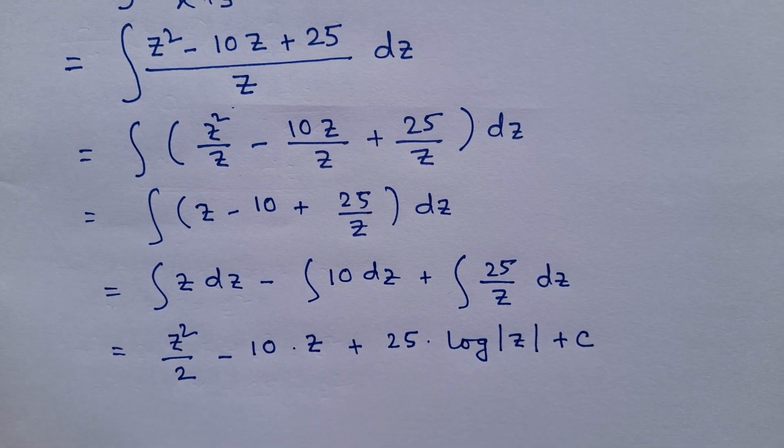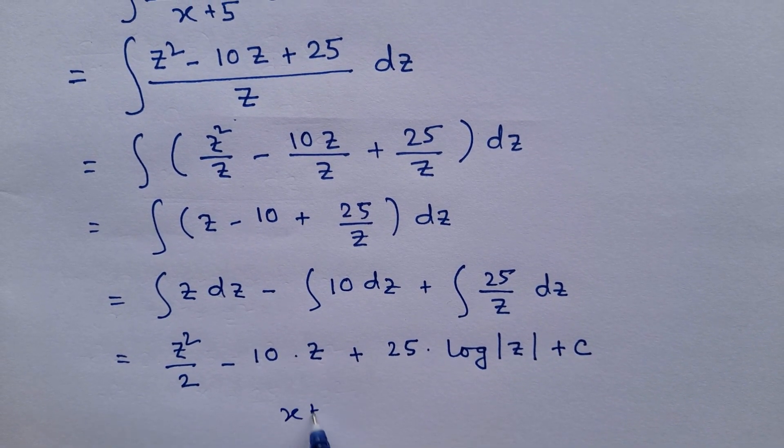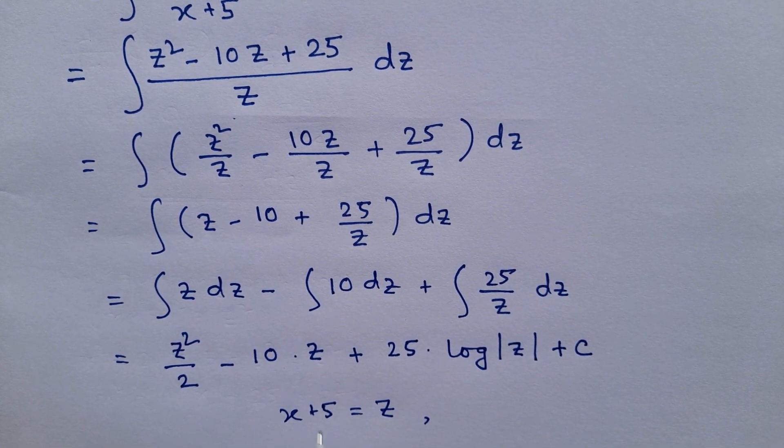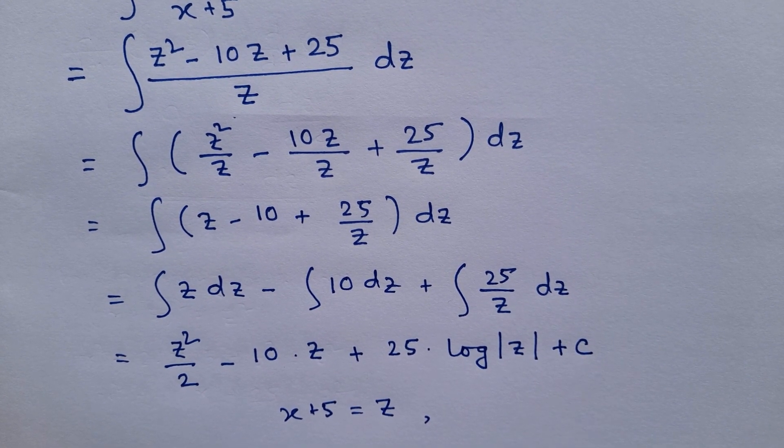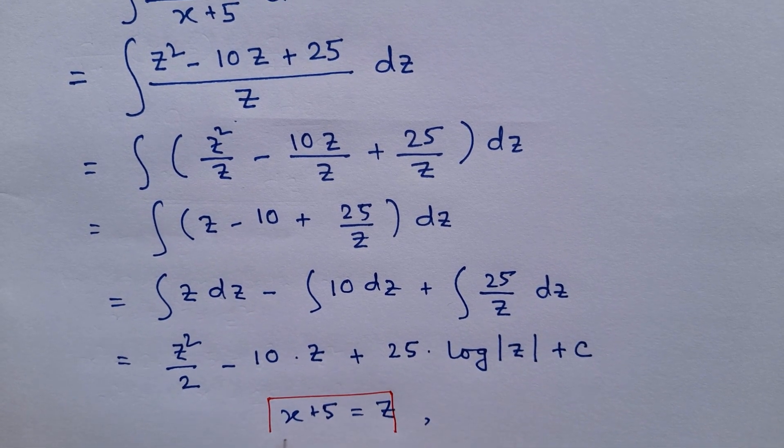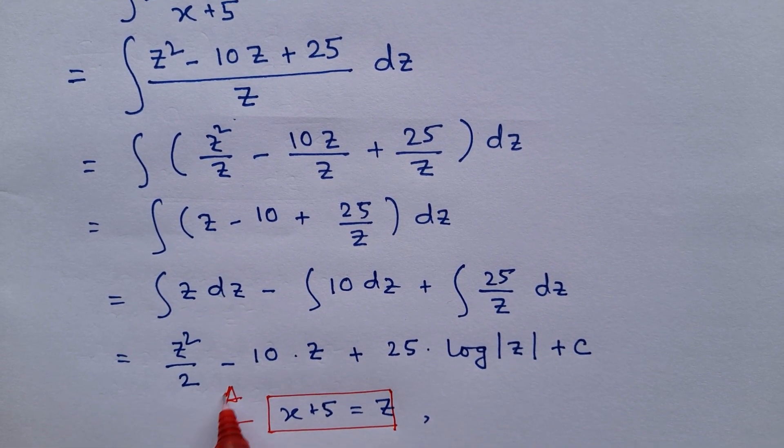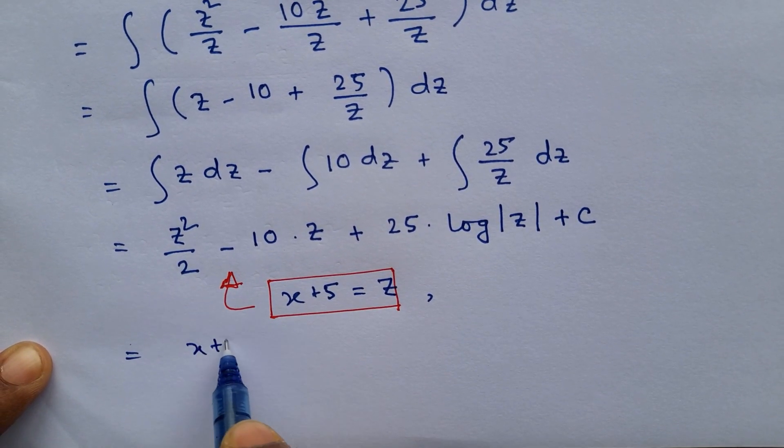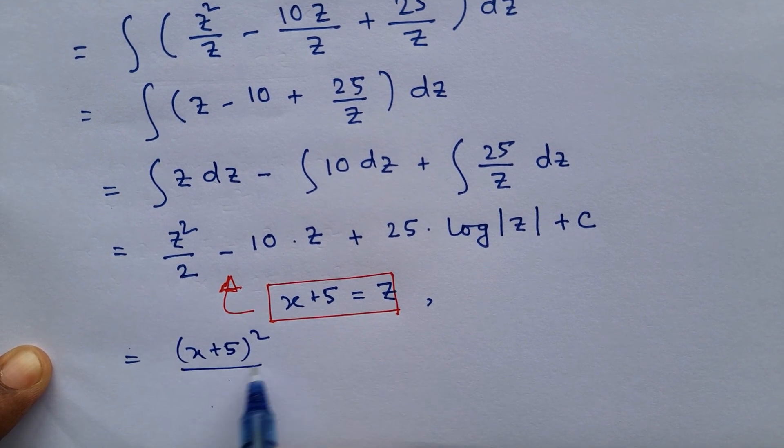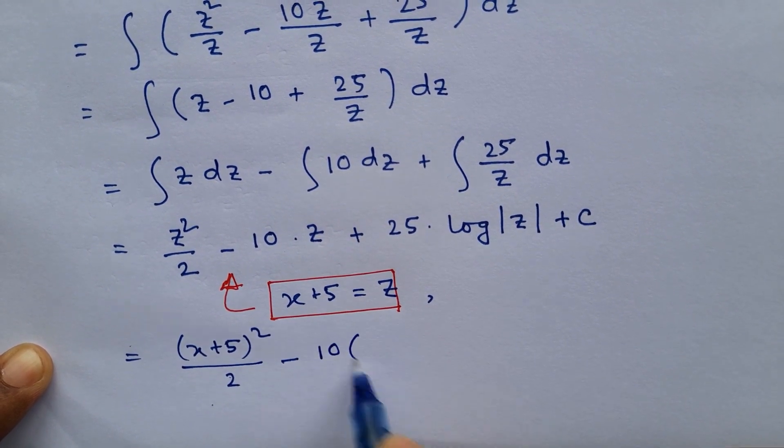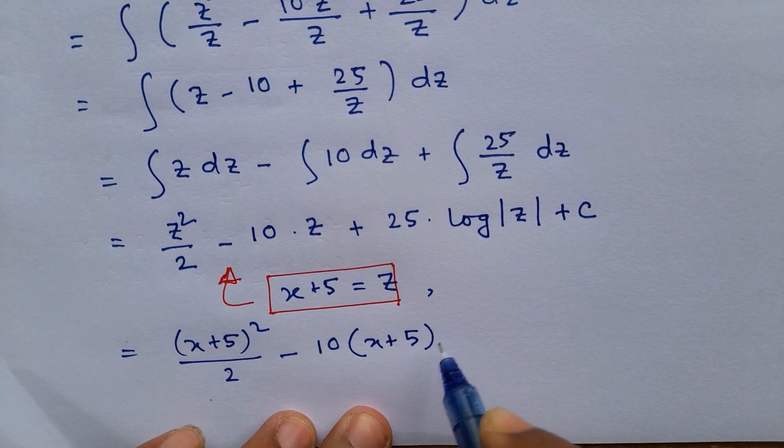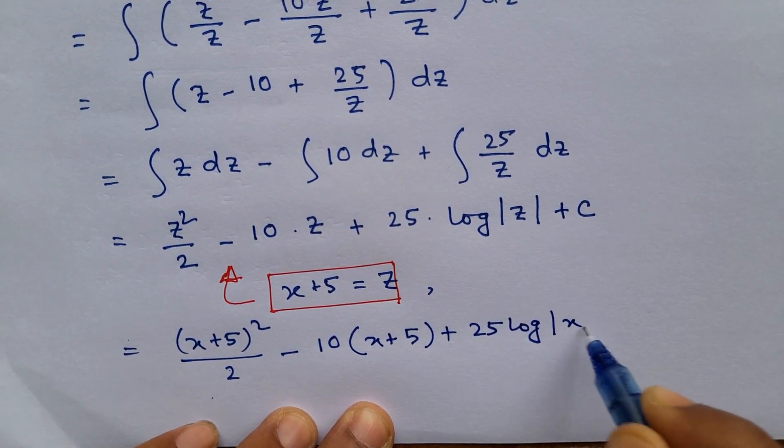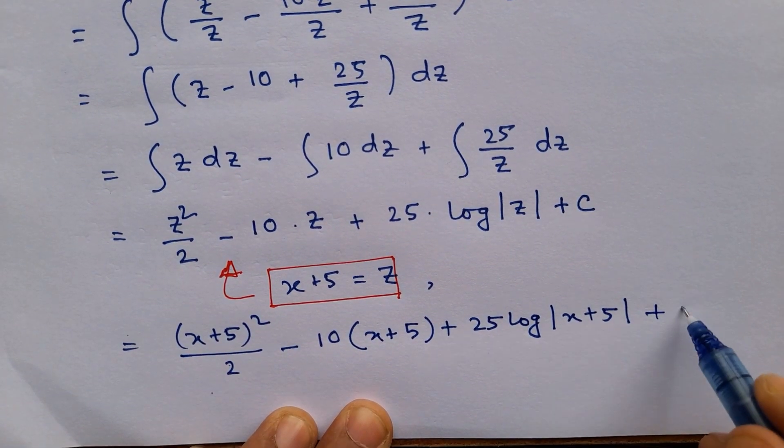Now we have considered x plus 5 equals z. So we will now substitute this into this expression. What we will get is x plus 5 whole square by 2 minus 10 times x plus 5 plus 25 times log of mod x plus 5 plus c.